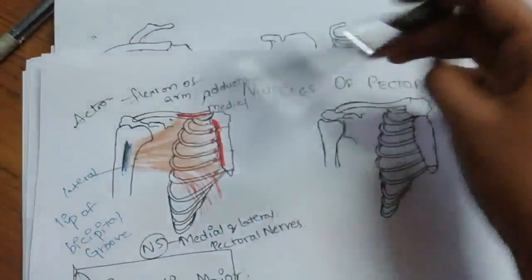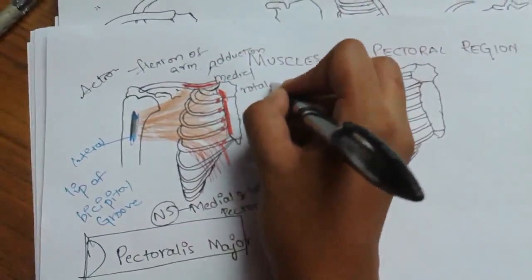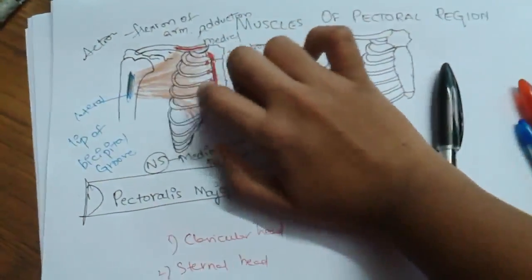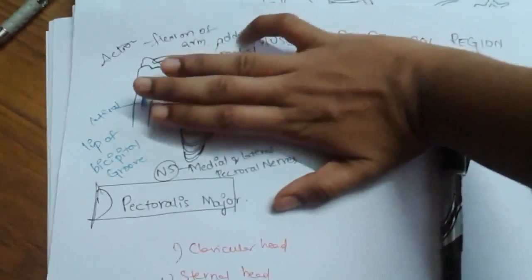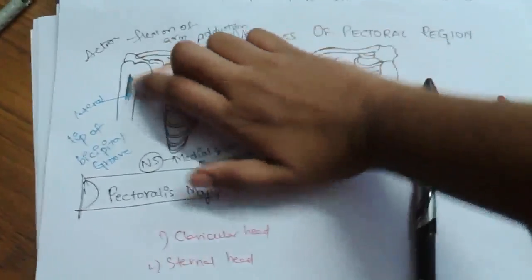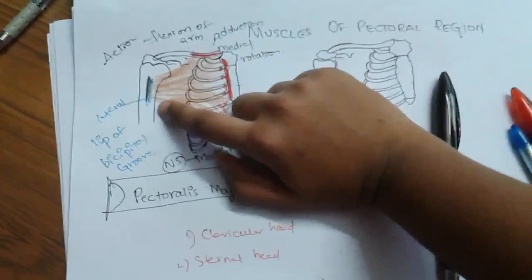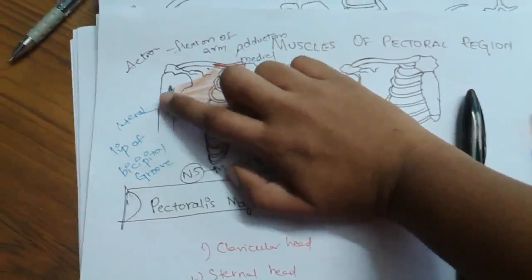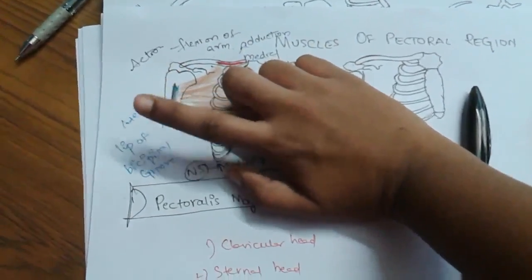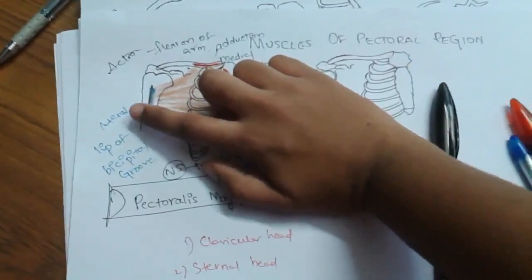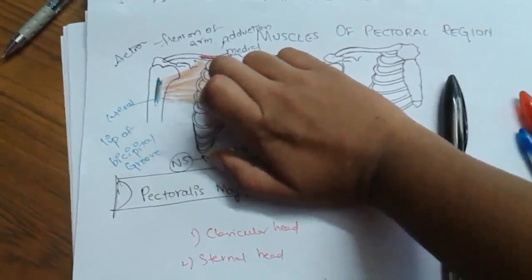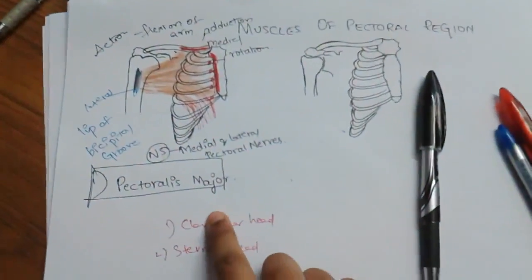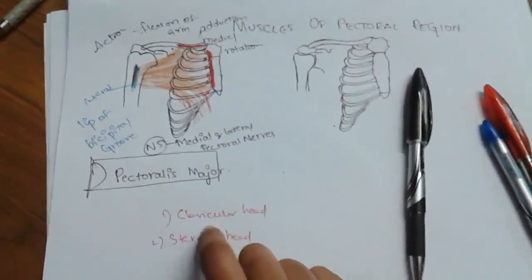It also produces medial rotation of the arm. So the three actions of pectoralis major are: flexion of the arm, adduction of the arm, and medial rotation of the arm. This is the first muscle of the pectoral region.